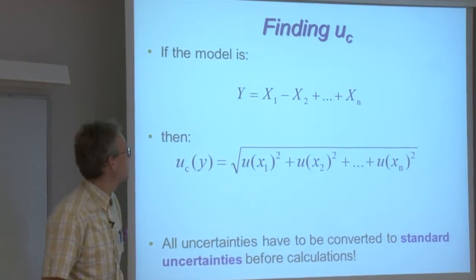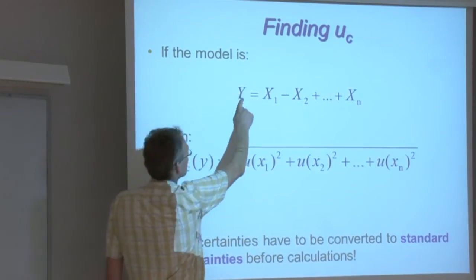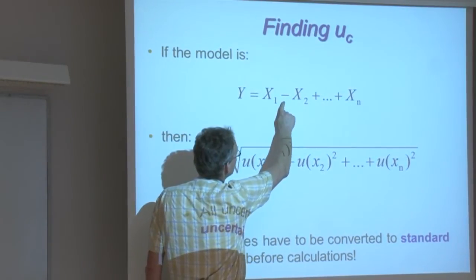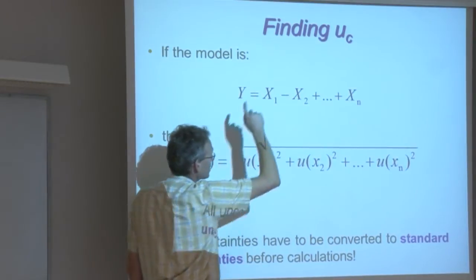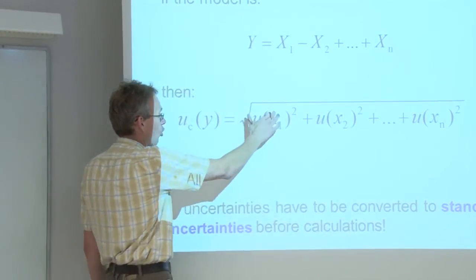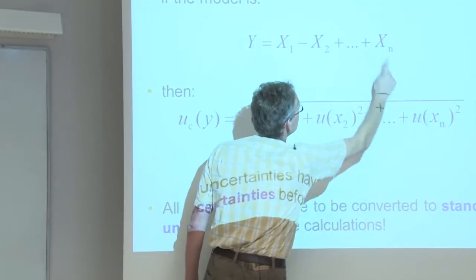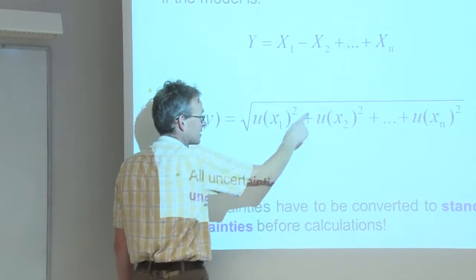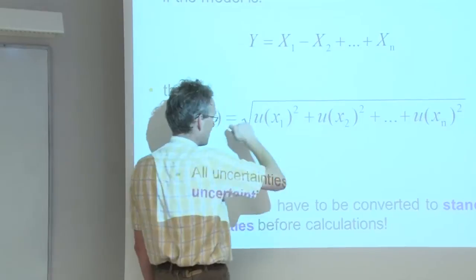So if our equation contains only additions and subtractions, we simply take all the standard uncertainties of all the input quantities, take them to the square, sum them up, and take square root.